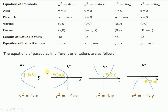The vertex for all four standard parabolas is (0, 0). The focus points are: (a, 0), (−a, 0), (0, a), and (0, −a). The latus rectum is found by dropping a perpendicular to the principal axis through the focus; it is parallel to the directrix in each case.